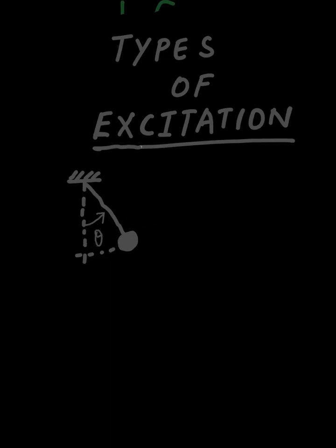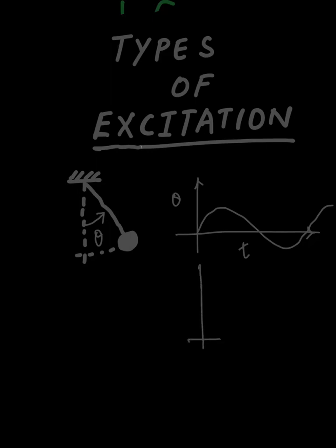In a free vibration problem, if there is no damping, if I plot theta with respect to time, it will go on and on with no change in amplitude. But if there is some damping involved — which is the case for most real life systems — then the amplitude will damp out like this.